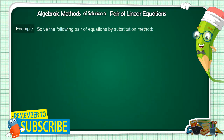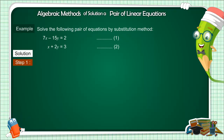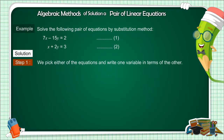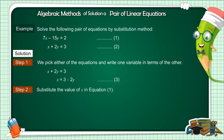In this example, two linear equations are given, which are to be solved by the substitution method. In this method, we can start with either of the two equations. Here we take the second equation, which is x plus 2y equals 3, which we can also write as x equals 3 minus 2y. Here we have got a value of x. Now we put this value of x in the first equation.